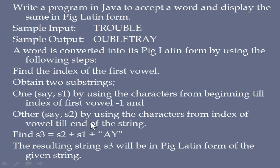S2 has the characters from the vowel till the end, S1 has the characters before the vowel, and you add AY. Once you add this, it will be stored in S3, and the resulting string S3 will be the Pig Latin form of the given string. We will see the Java program in BlueJ and how to solve this.